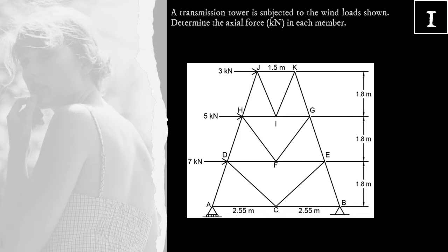In method of joints, we are going to analyze each joint. However, note that in a joint, the maximum number of unknown forces should be equal to 2. Why? Because the free body diagram of a joint is a concurrent force system, and in a concurrent force system, there are only two equilibrium conditions: summation Fx equal to 0 and summation Fy equal to 0. Therefore, the maximum number of unknown forces in a joint should be equal to 2.